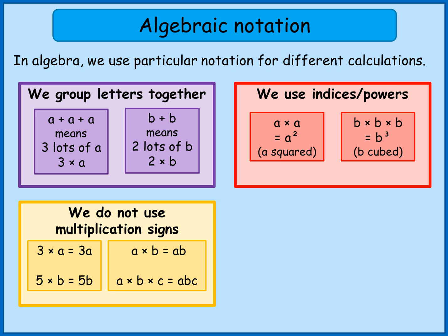If I have three or four or more letters multiplied together, I remove all the multiplication signs. So a times b times c is just written as abc. Whenever you see two letters together, you should imagine there's a multiplication sign in the middle. And whenever you see a number and a letter together, you should imagine there's a multiplication sign in the middle.